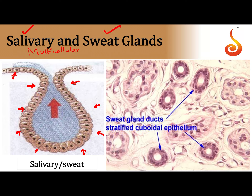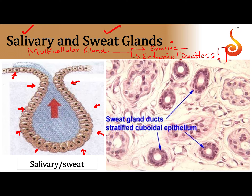When a gland is made up of more than one cell it is called a multicellular gland. A multicellular gland may have a duct or tube — it is called an exocrine gland — or it may pour its secretion into the surrounding fluid such as blood or lymph, in which case it is referred to as an endocrine gland. Endocrine glands do not have a duct, so they are referred to as ductless glands.